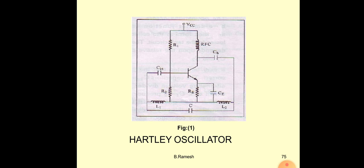One inductor in the network produces a 90-degree phase shift, and another inductor produces another 90-degree phase shift, giving a total of 180 degrees phase shift. The input signal is given to the transistor, which acts as an amplifier and produces a further 180-degree phase shift, giving a total of 360 degrees. This satisfies the Barkhausen criteria, causing the circuit to start oscillations and produce a sustained signal.